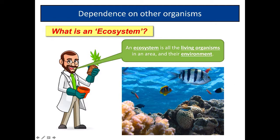Here we have a coral reef ecosystem. We've got the coral itself, which is a living organism, and surrounding it all the fish living in the ocean. An ecosystem is all living organisms in an area and their environment.